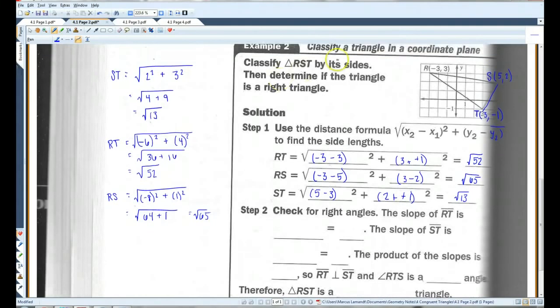So, already we can kind of tell, because all three sides are different lengths, it's going to be a scalene triangle. Now let's look for right angles. We can kind of see that this one is not a right angle, and hopefully, I think we can kind of see that this one's not a right angle either. This is the only one that looks like it might be a right angle. So, okay, the slope of RT,